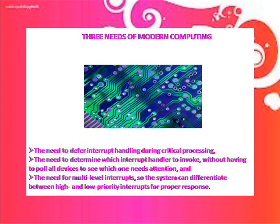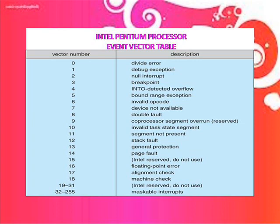Three needs of modern computing: the need to defer interrupt handling during critical processing; the need to determine which interrupt handler to invoke without having to poll all devices; and the need for multi-level interrupts so the system can determine priority between high and low priority interrupts. Intel Pentium processor event vector table: 0 — device error; 1 — debug exception; 2 — null interrupt; 3 — breakpoint; 4 — into detected overflow; 5 — bounded range exception; 6 — invalid opcode; 7 — device not available; 8 — double fault; 9 — coprocessor; 10 — invalid task state segment; 11 — segment not present; 12 — stack fault; 13 — general protection; 14 — page fault; 15 — Intel reserved, do not use; 16 — floating point error; 17 — alignment check; 18 — machine check; 19 to 31 — Intel reserved, do not use; 32 to 255 — maskable interrupts.